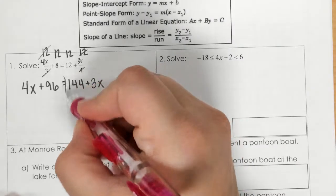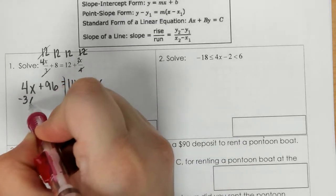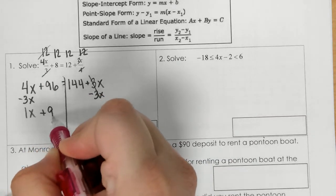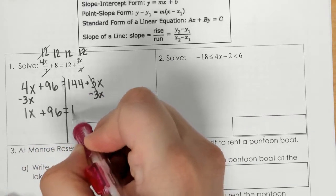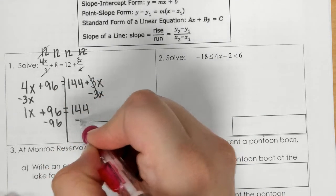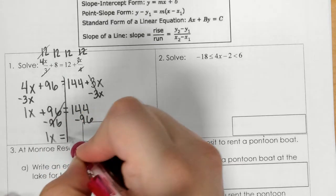Alright, now we're subtracting 3x to both sides, and we get 1x. Then we subtract 96 to both sides, and we get 1x equals 48.